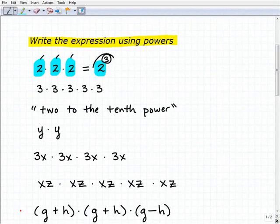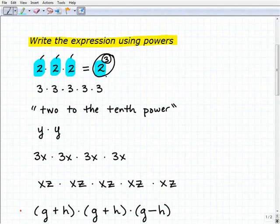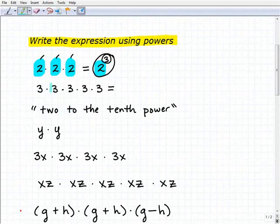So we're taking 2, multiplying it by itself three times. So 2 cubed or 2 to the third power is the way we write that, and this is a power.